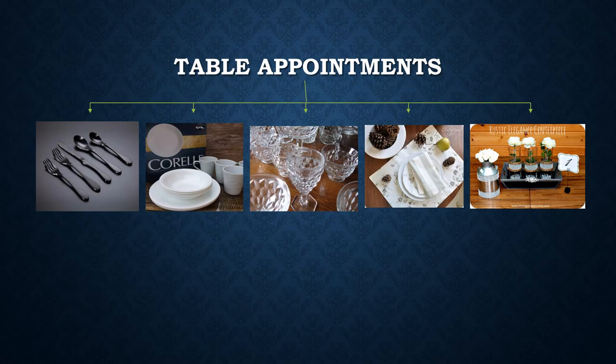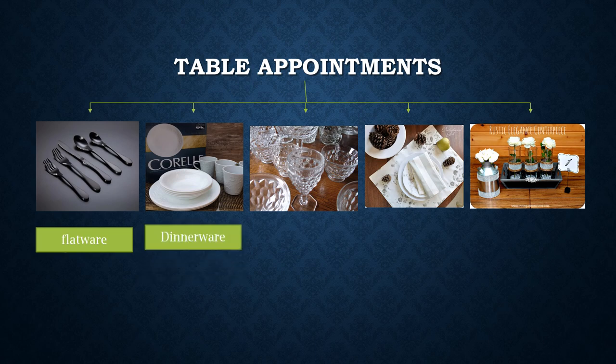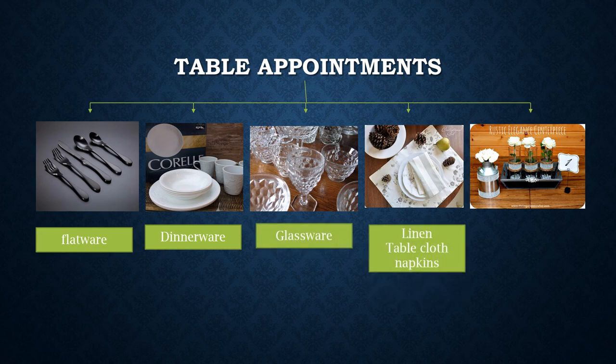So what are table appointments? Table appointments include flatware — which includes forks, knives, and spoons — dinnerware, which includes dinner plates, quarter plates, soup plates, and serving dishes. We also have glassware, linen — meaning tablecloths and napkins — and centerpieces, which are the focal highlight of the table setting. Today we will only discuss flatware, and the other table appointments will be covered in future presentations.